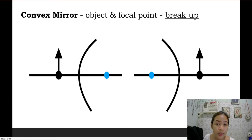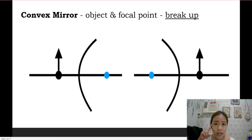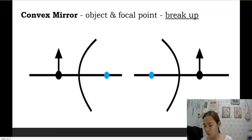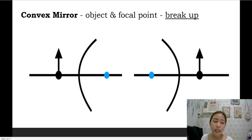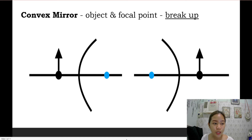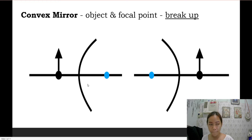Now let's have the convex mirror. Whenever you and your boyfriend or girlfriend break up, meaning you are already using a convex mirror — because in a convex mirror, the object and the focal point are no longer together. The focal point is still inside the curve, but the object is now outside. Always remember that the focal point must always be inside the curve of the mirror.